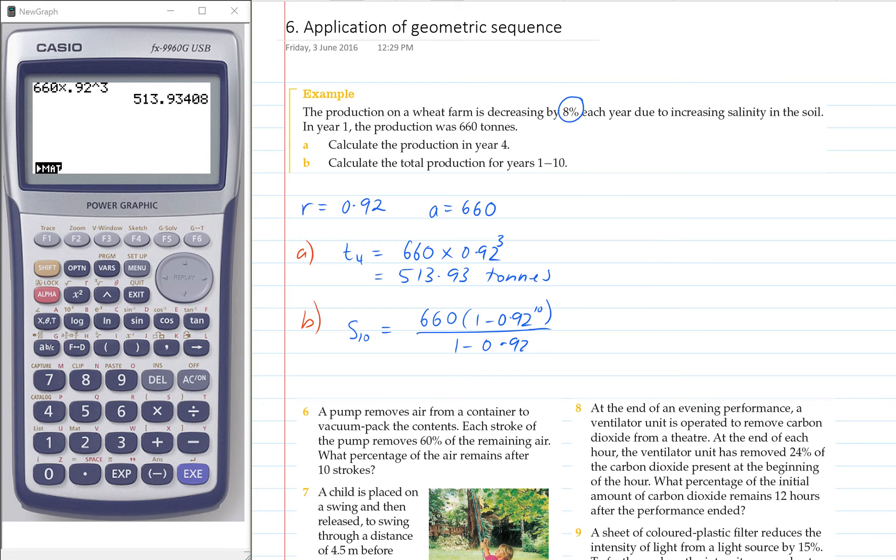Okay, so let's put that into our calculator. 660 times 1 minus 0.92 to the power of 10. And that's divided by 1 minus 0.09, so that'll be 0.08. And then we get 4,666 tonnes. So 4,666.30 tonnes to 2dp.